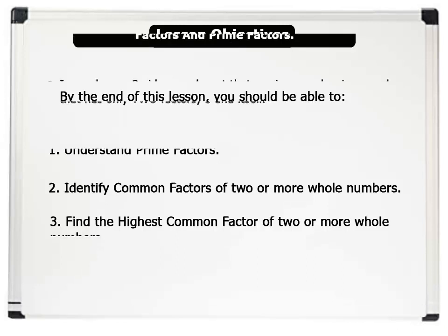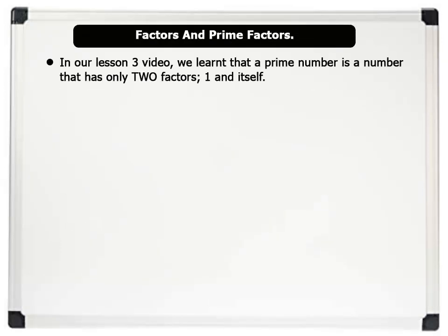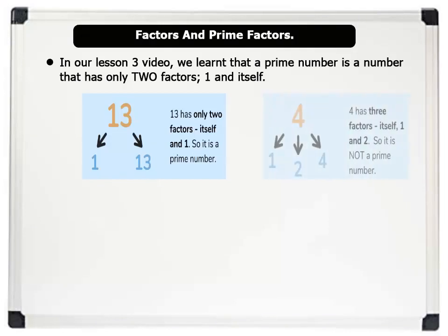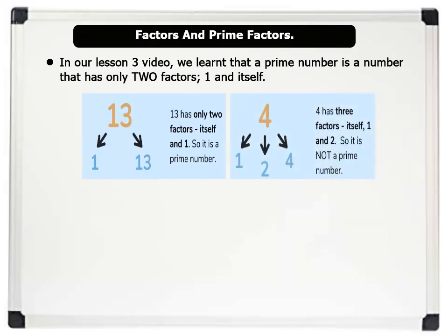In our lesson 3 video, we learned that a prime number is a number that has only two factors: 1 and itself. For example, the number 13 has only two factors — 1 and itself — so it is a prime number. But the number 4 has more than two factors: 1, 2, and itself. Hence, it is not a prime number.